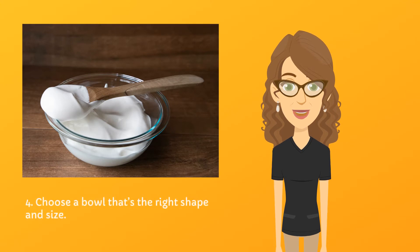Choose a bowl that's the right shape and size. It should be small enough to prevent the unbeaten whites from spreading into a shallow puddle, but large enough to hold the increased volume of the finished egg foam.